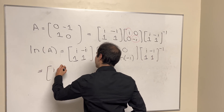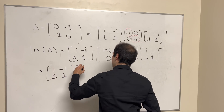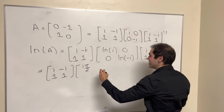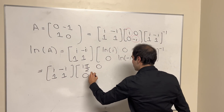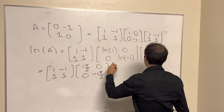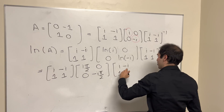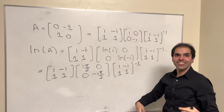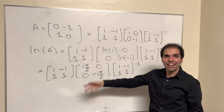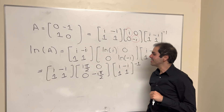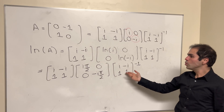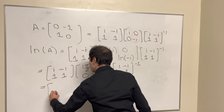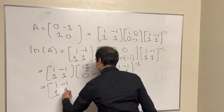So this becomes [[i, −i], [1, 1]] times [[iπ/2, 0], [0, −iπ/2]] — using principal logs, technically valid up to multiples of 2πm, which I'll mention later — times the inverse of [[i, −i], [1, 1]]. All we need to do is calculate that inverse and multiply by all those matrices.